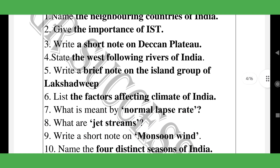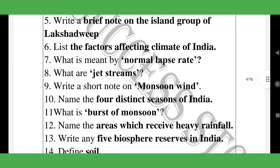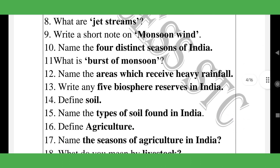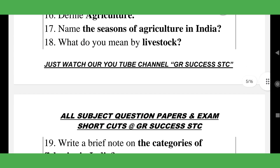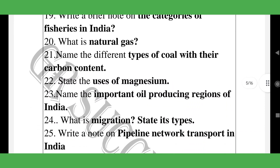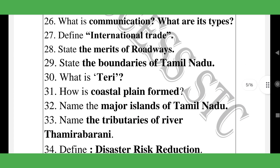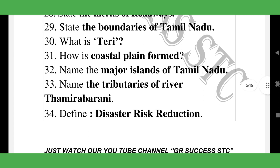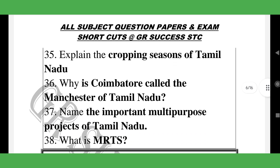Geography topics: neighboring countries of India, importance of island groups, factors affecting climate of India, normal lapse rate, jet stream, monsoon winds, four distinct seasons of India, burst of monsoon, seasons of agriculture, categories of fisheries in India, natural gas, major islands of Tamil Nadu — these are repeated questions in previous public exams — disaster risk reduction.